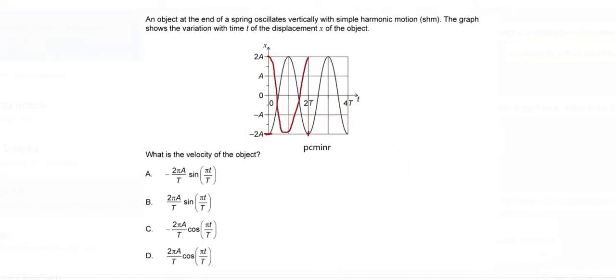That means the graph given represents a negative cosine wave. Therefore the displacement being represented in this graph is negative x naught cos of omega t.